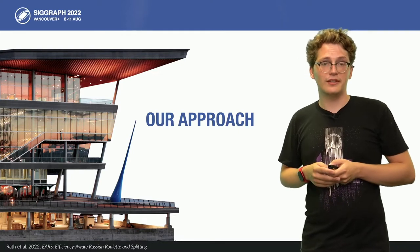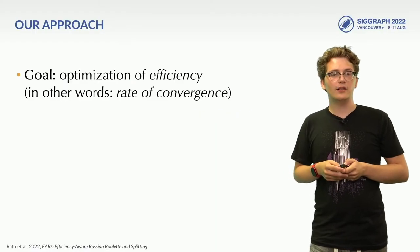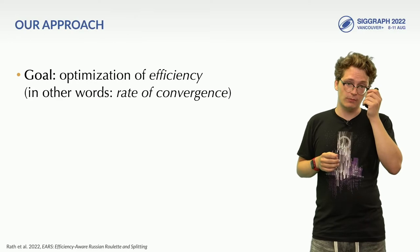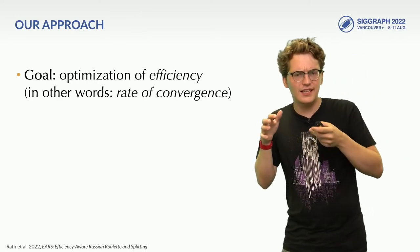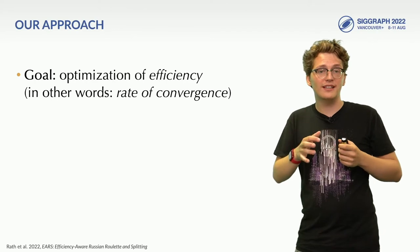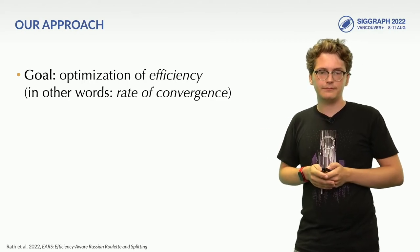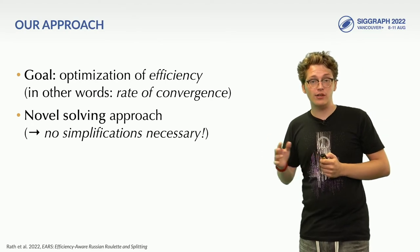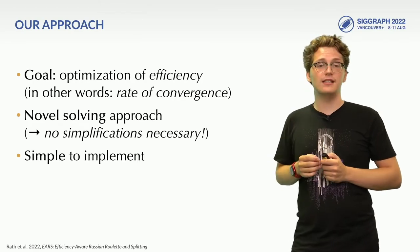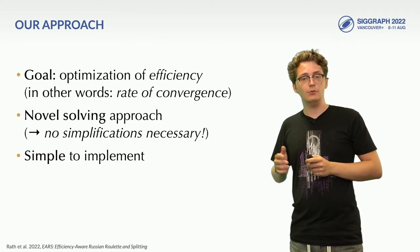Now that we have seen how previous works approach Russian Roulette and splitting, let us see how our approach tackles these challenges. In Efficiency Aware Russian Roulette and Splitting, or EAS for short, we formulate the problem of finding splitting factors as an efficiency optimization problem. Efficiency is just the inverse product of variance and cost of our rendered image — put simply, we are maximizing the rate with which our rendered image will converge. This is somewhat similar to Boulin and Meyer's approach, albeit without the fixed ray budget, and we use a fundamentally different approach to solving this optimization problem.